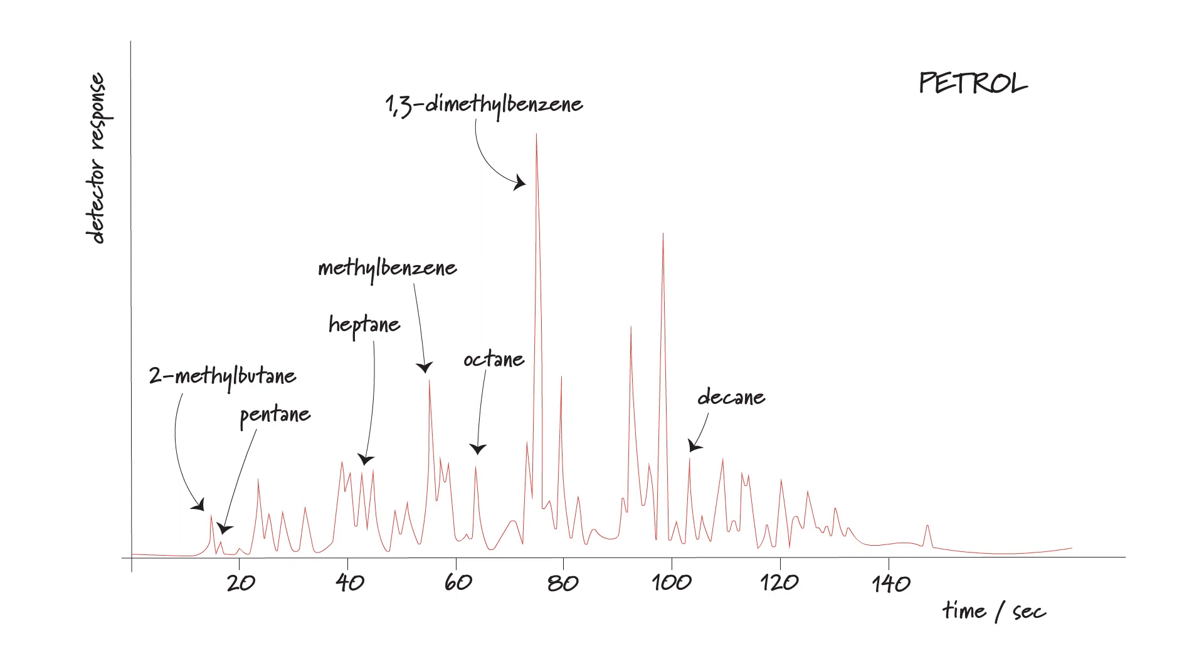The area under a peak is proportional to the concentration or amount of each substance in the mixture and we can use the retention times to identify different peaks or substances by comparing with retention times and known compounds assuming that the flow rate, the temperature, the mobile and the stationary phases are all standardised.